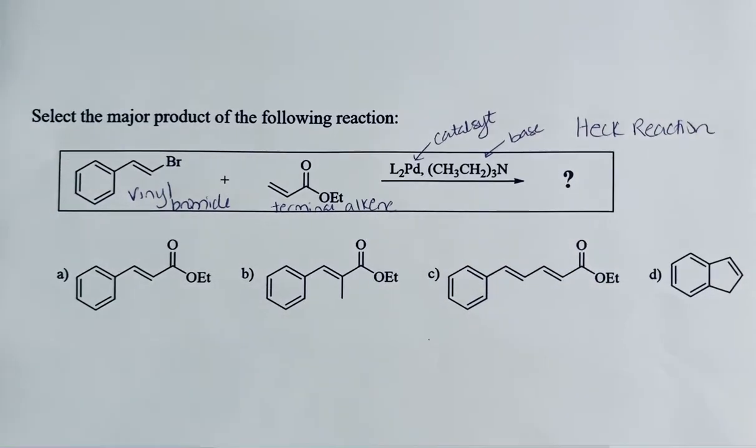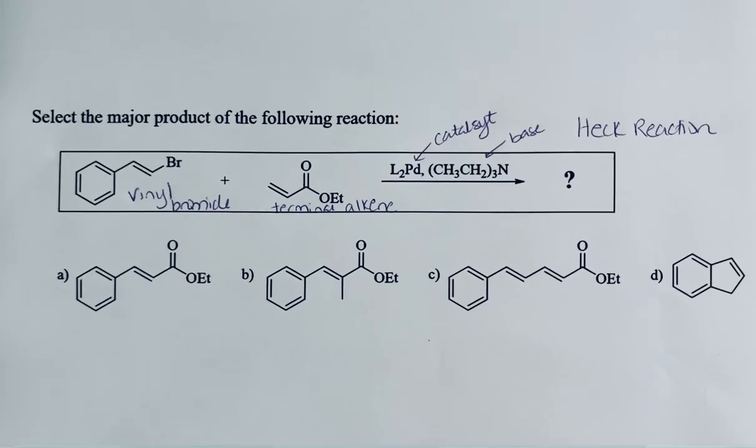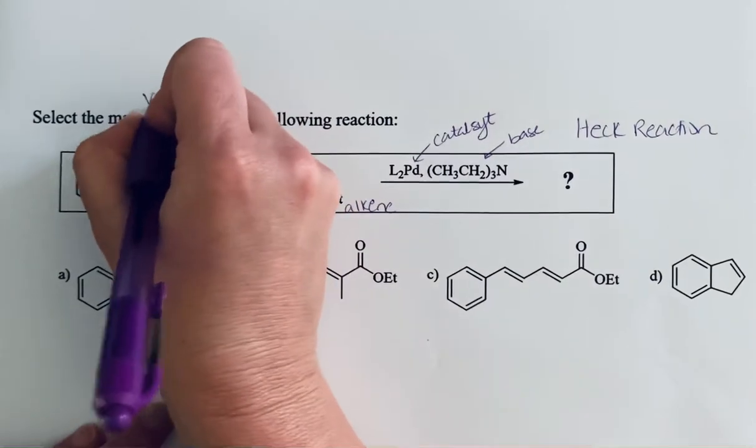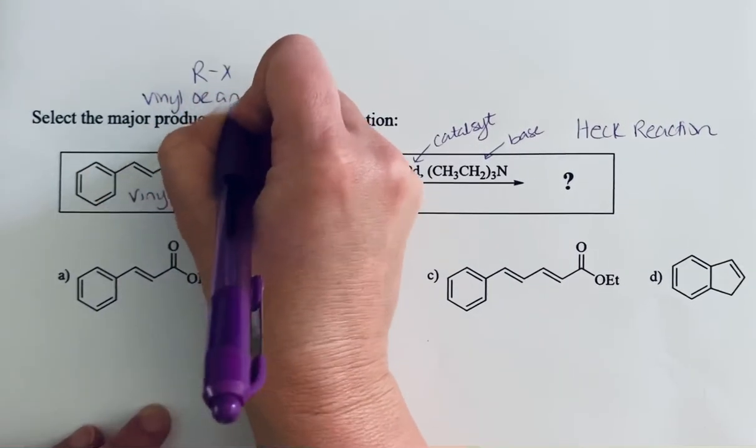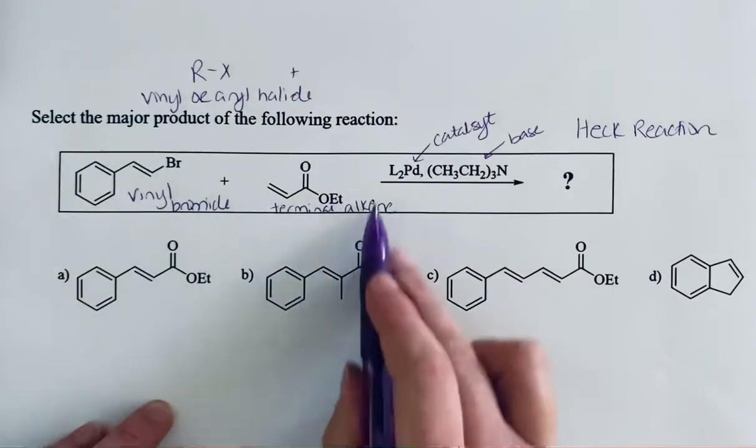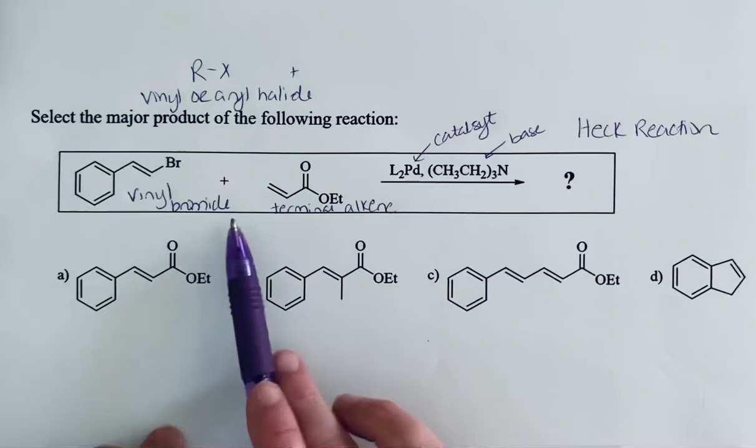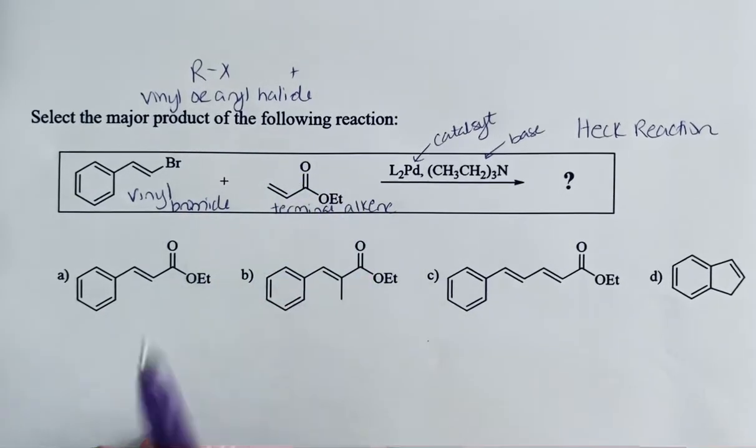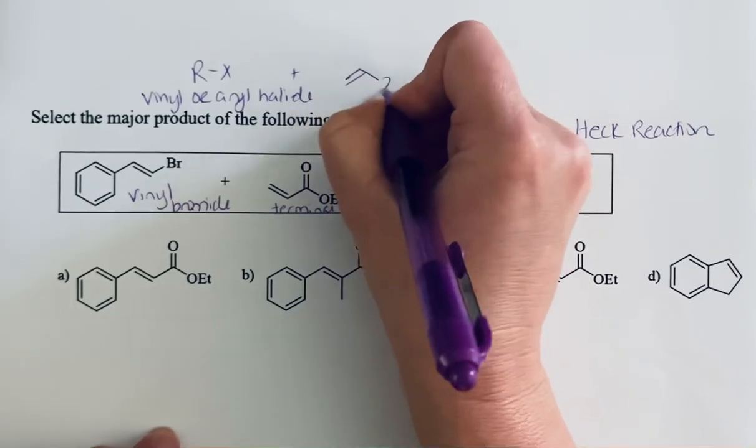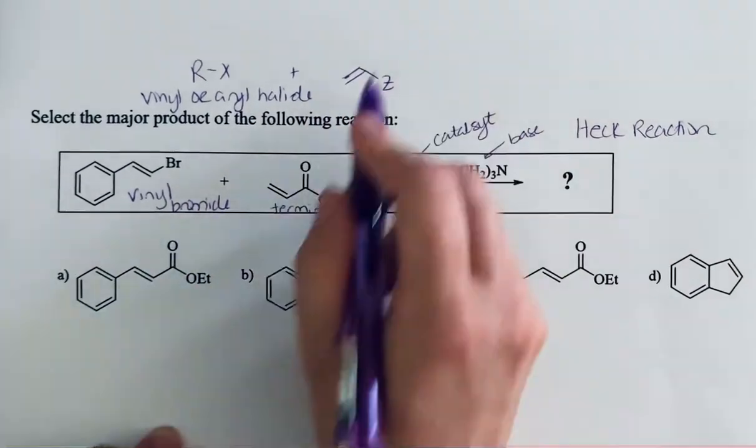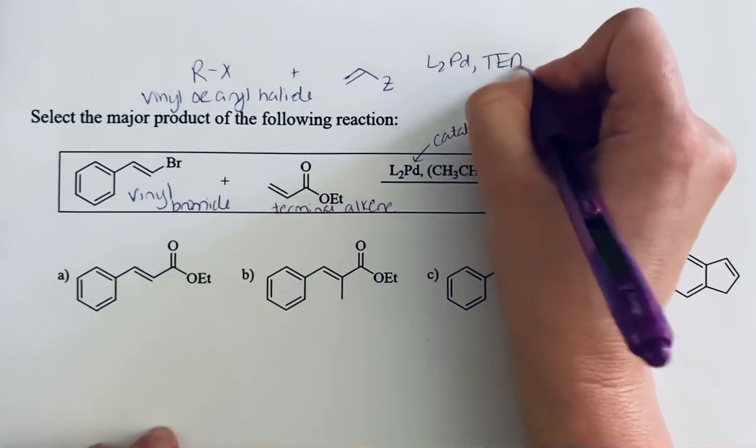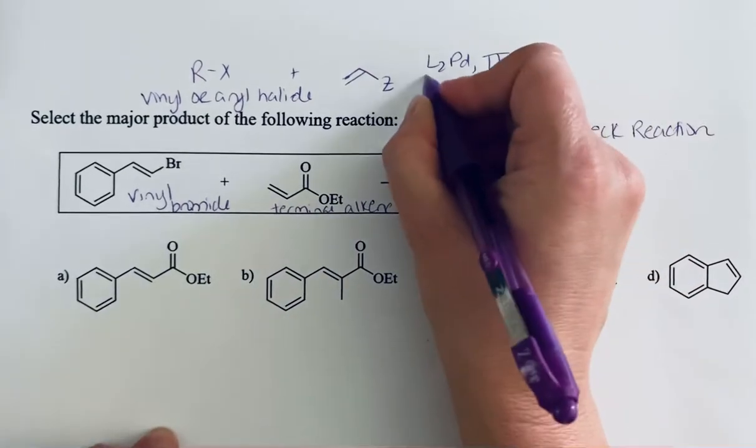A HEC reaction is another example of a palladium catalyzed coupling reaction. So the general scheme for a HEC reaction is you have either a vinyl or aryl halide and the reaction works best with a terminal alkene and typically we'll see a terminal alkene that has an electron withdrawing group. We're just going to draw Z to represent a general group. So there's our alkene and we've got our catalyst and our base which is triethylamine so I'm going to abbreviate that TEA.